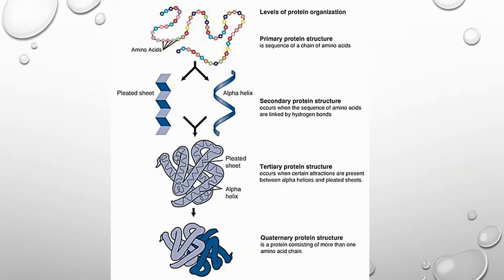There are levels of protein organization. The linear chain of amino acids is called the primary protein structure. The secondary protein structure occurs when amino acids are linked by hydrogen bonds — examples are beta strand and alpha helix. Beta strands that form hydrogen bonds with each other make beta pleated sheets. Tertiary protein structure occurs when certain attractions are present between alpha helices and beta pleated sheets, and is the specific conformation a protein takes when finally folded.